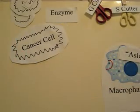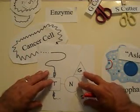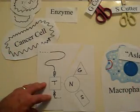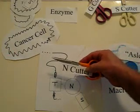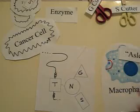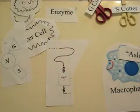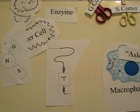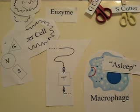Now we're going to look at what happens with a cancer cell. A cancer cell comes up to that same GC protein that we started with. It releases an enzyme, an N-cutter, and it cuts all three sugars off. So there are no sugars on this molecule, and it cannot bind to the sleeping macrophage, and it cannot activate it.